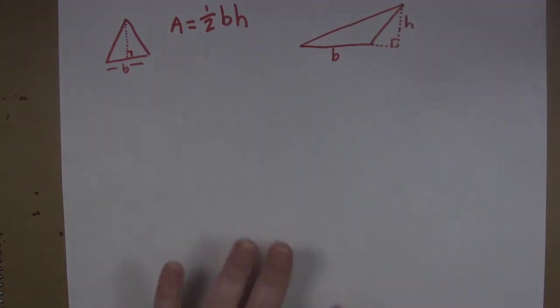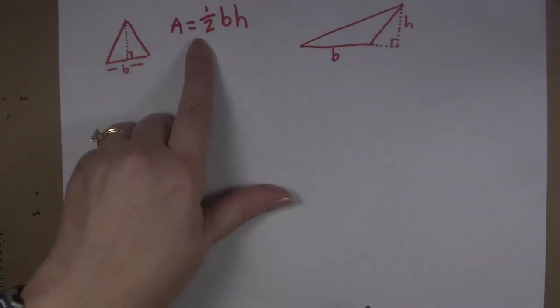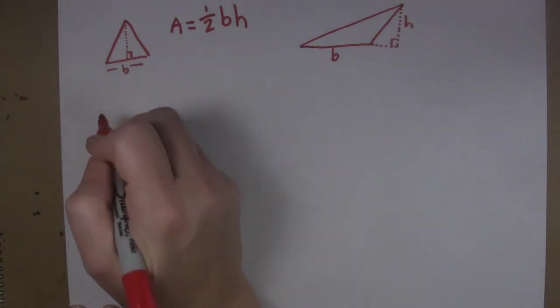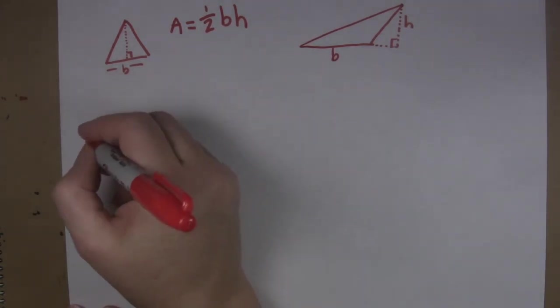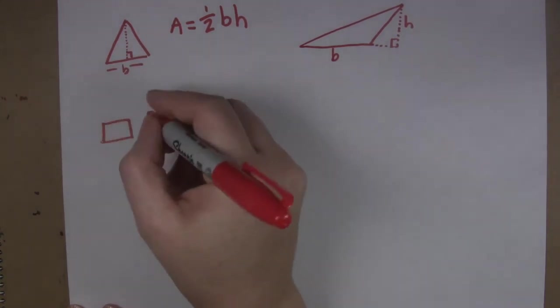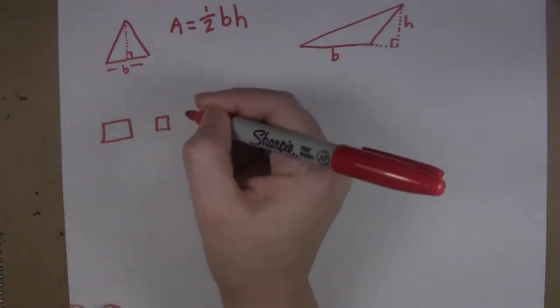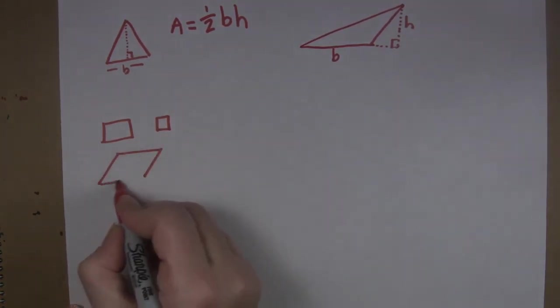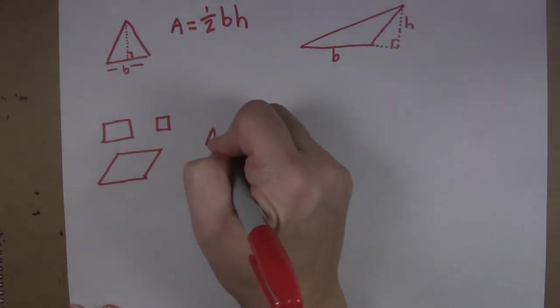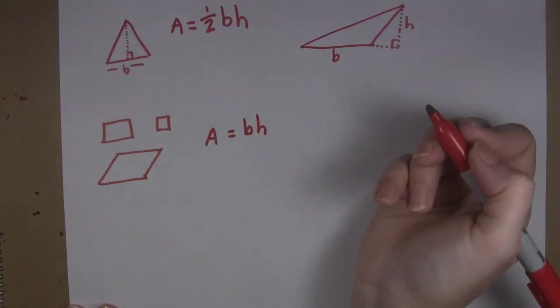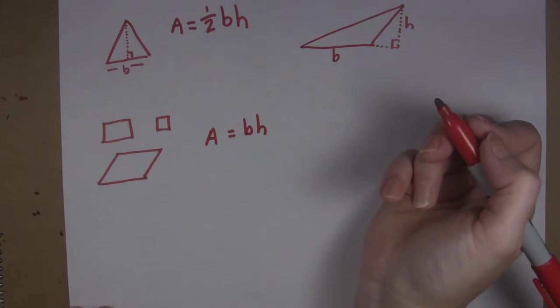So you pretend like that is. You have to figure that out. Okay so this is the area of a triangle. Yes you have to know it. Now for a lot of the other shapes like rectangles and squares and parallelograms, all of these things it is base times height. That's your formula is base times height.